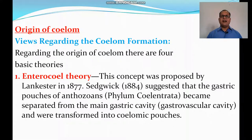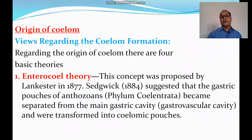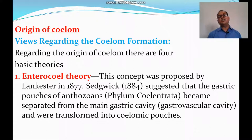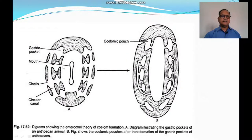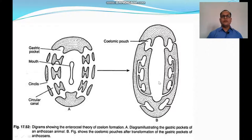Origin of Coelom. Regarding the origin of Coelom, there are four basic theories. The first is the Enterocoel theory, proposed by Lankester and Sedgwick. It suggests that the gastric pouches of anthozoans (Phylum Coelenterata) became separated from the main gastrovascular cavity and were transformed into coelomic pouches. However, there is no strong evidence for this. The diagram shows various canals separating from the endoderm and ectoderm to form coelomic pouches, illustrating the enterocoel theory.